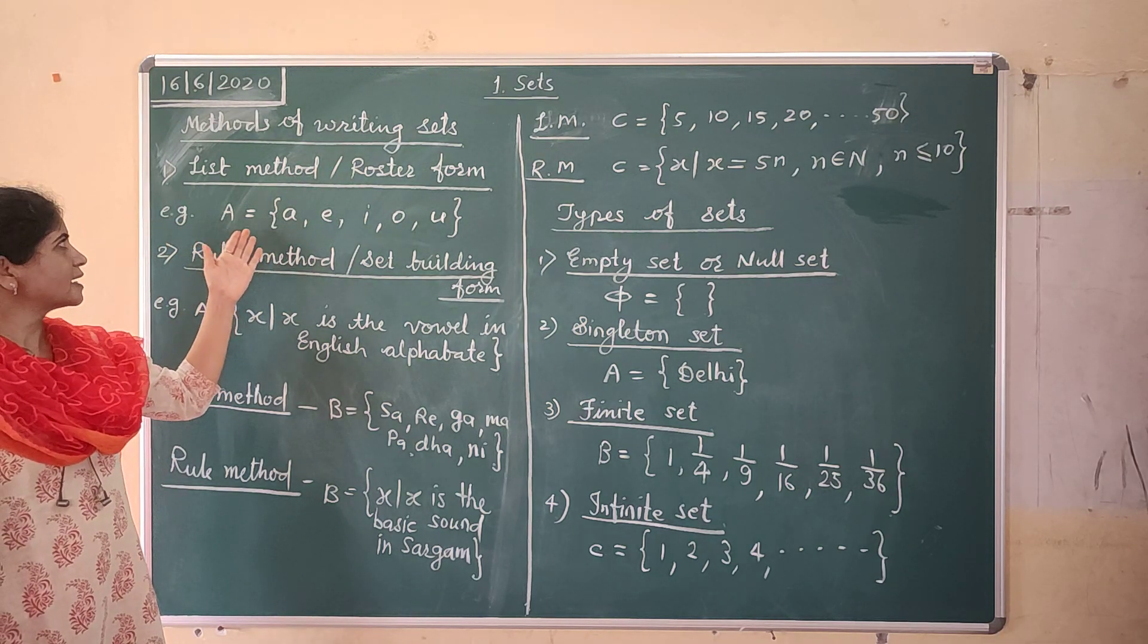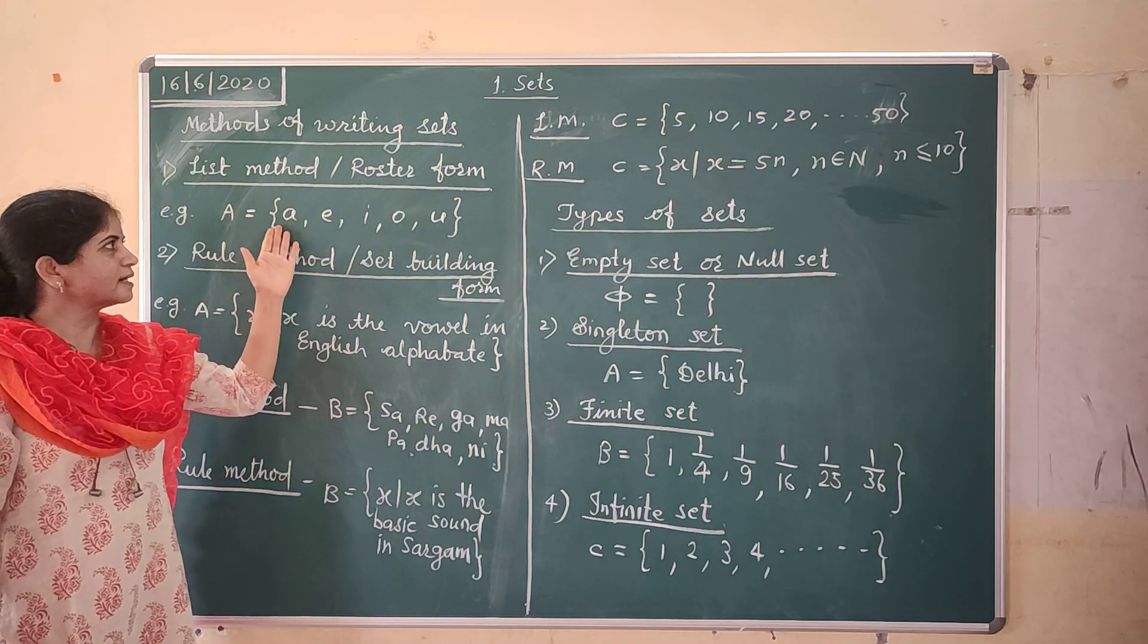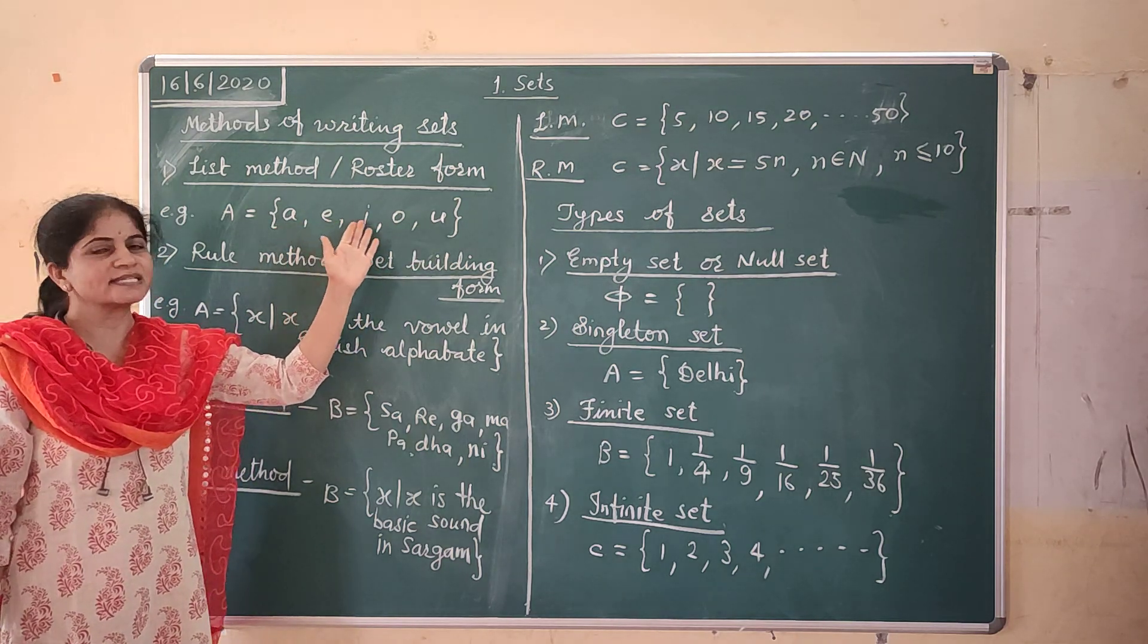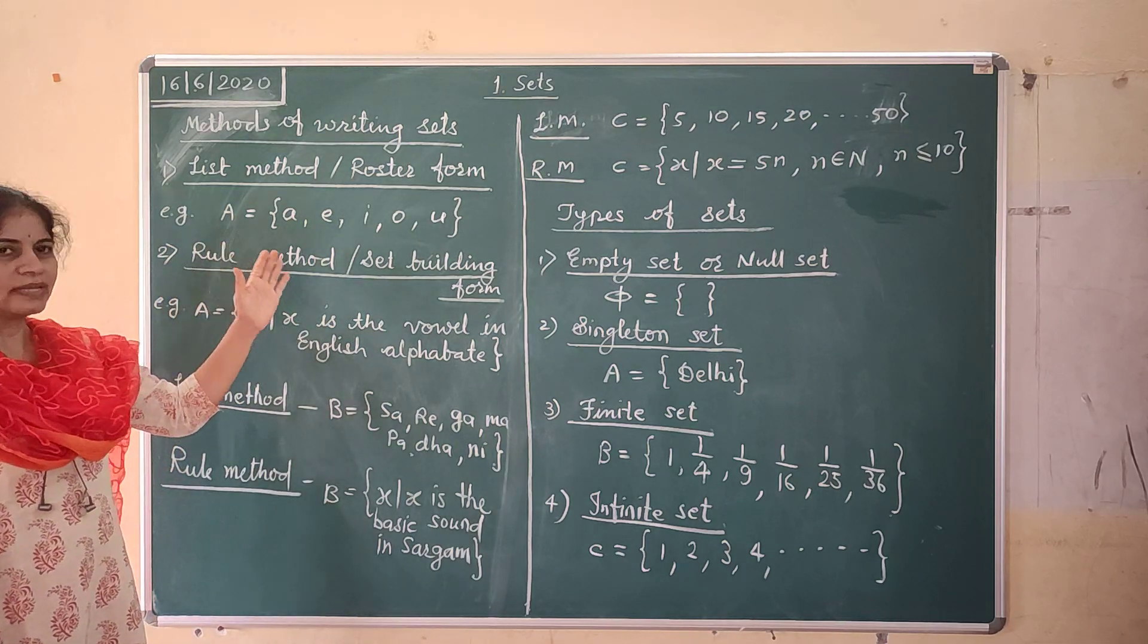So while writing sets we are just writing here the list of the elements or objects present in the sets. Now what is the rule method?